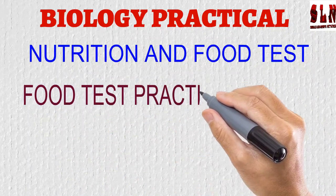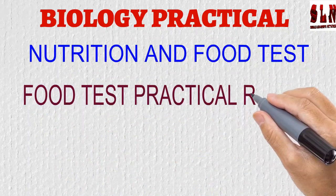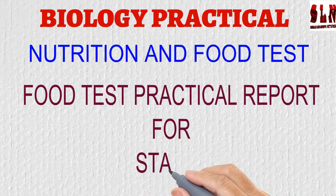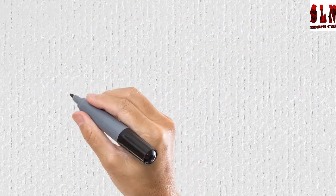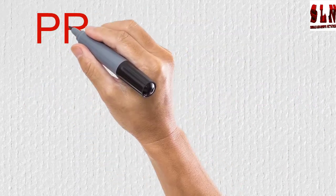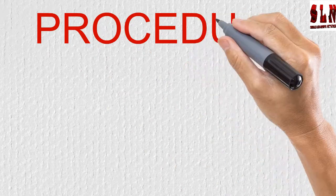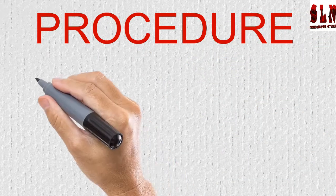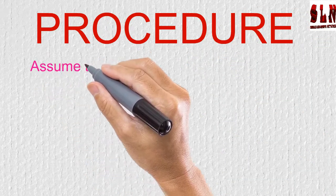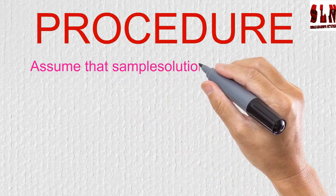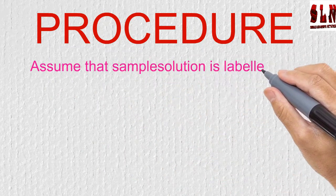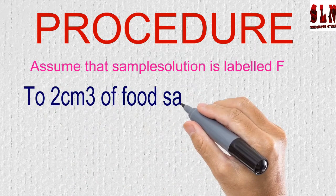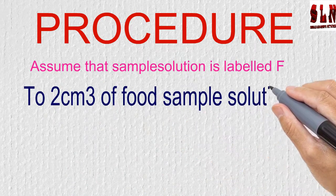Test for starch — procedure. Assume that your sample solution is labeled as F. Two milliliters of food substance sample solution F was poured into a test tube, then three drops of iodine solution were added.